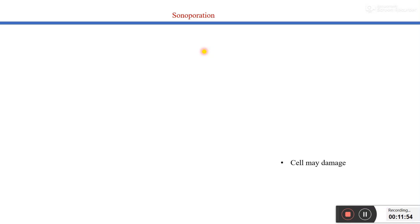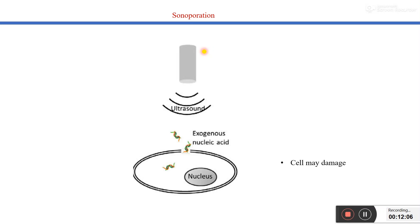The next important physical method of gene transfer is sonoporation. As the name suggests, in this method we use sound waves — specifically ultrasound waves — to transfer our gene of interest into the target cell. These ultrasound waves disturb the integrity of the plasma membrane, causing small pores to form. Through those pores, the exogenous or foreign DNA enters inside the cell. Once it enters the cytoplasm, it goes into the nucleus where it integrates with the genome and shows its application.